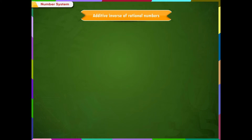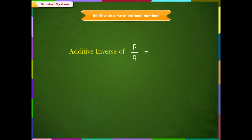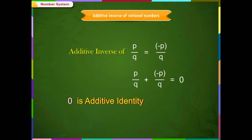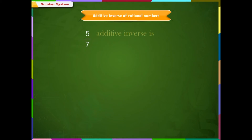Additive Inverse of Rational Numbers. By additive inverse of rational numbers, we mean that there exists a rational number p/q such that its additive inverse is -p/q. If we add the given rational number with its additive inverse, the result is always 0. We call this 0 the additive identity. We can express this relation as: p/q + (-p/q) = 0.